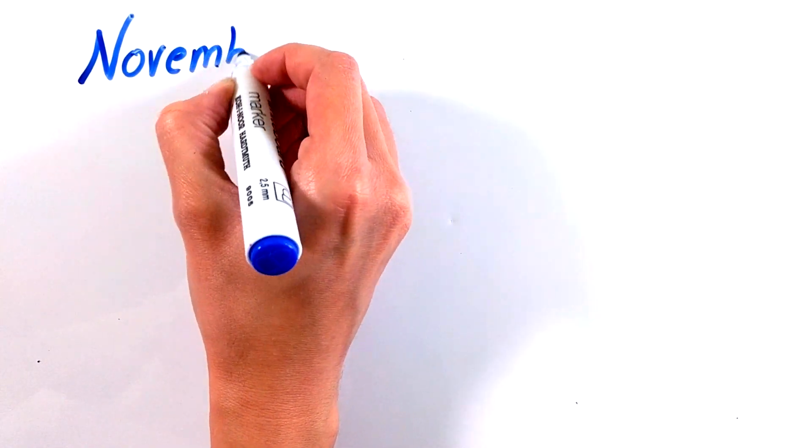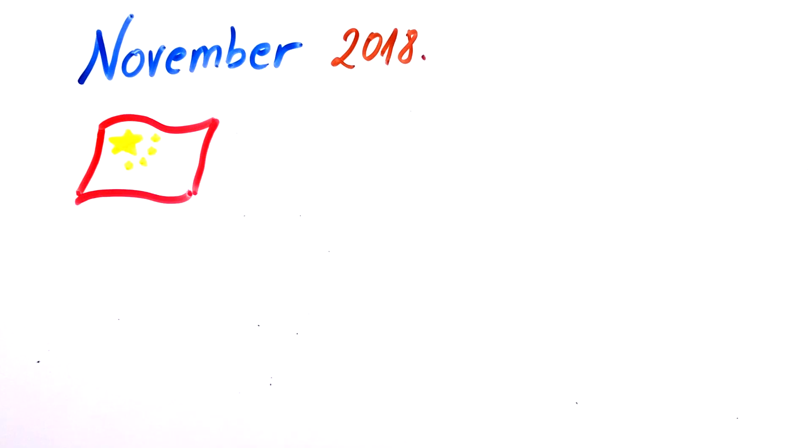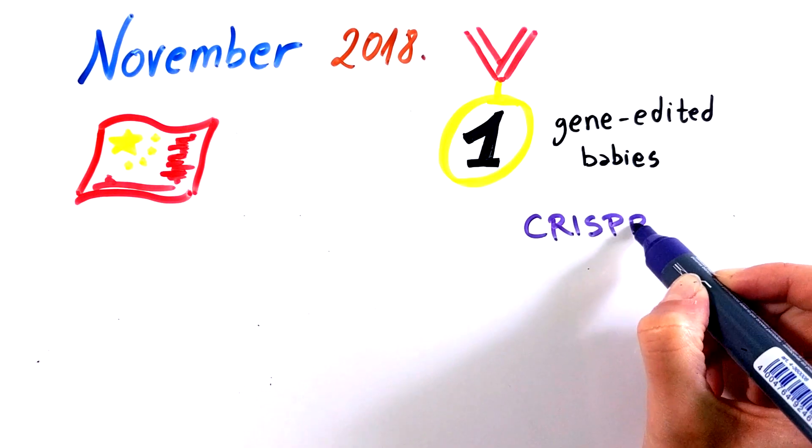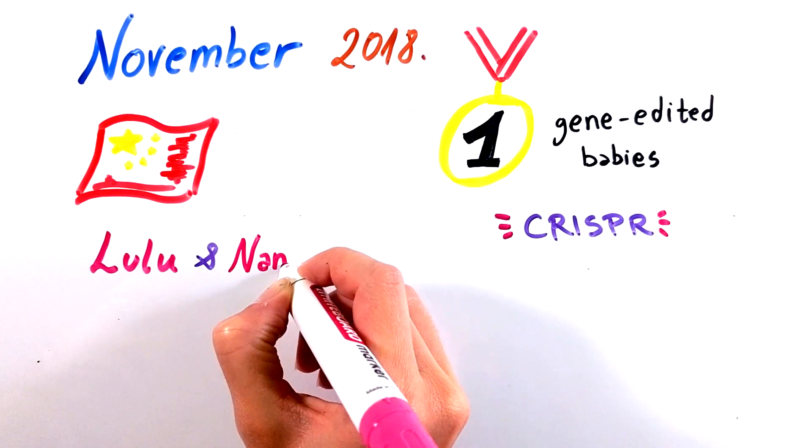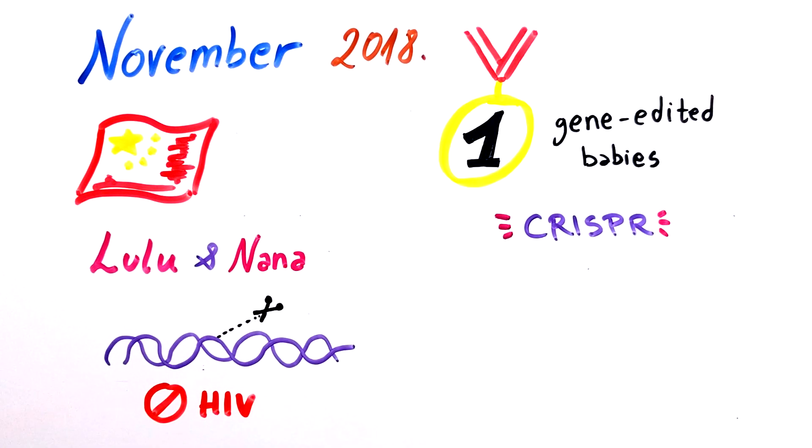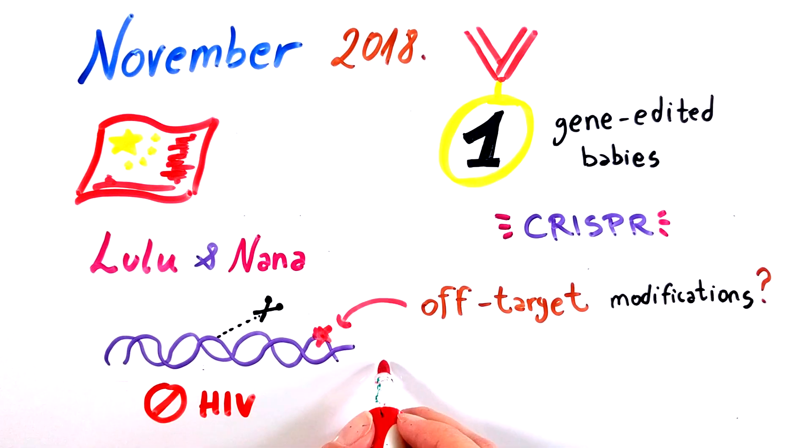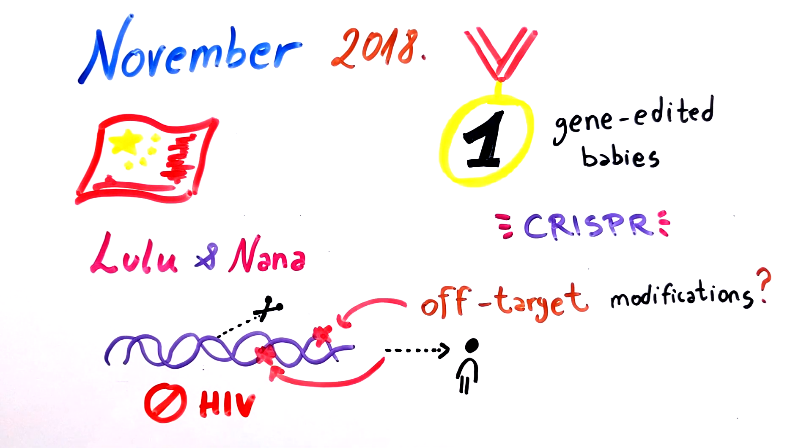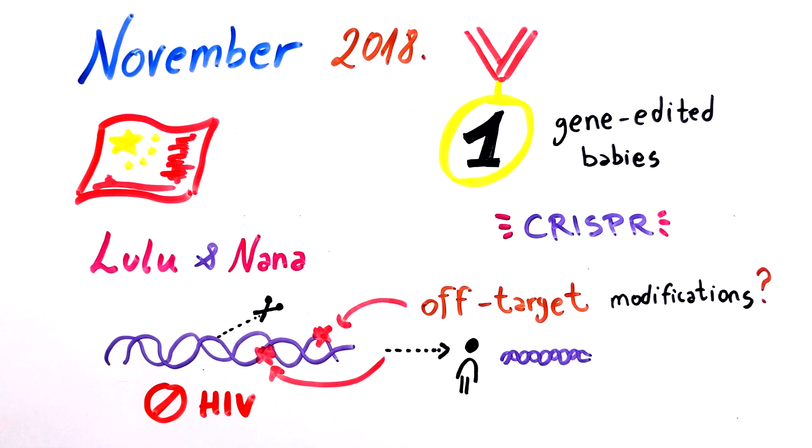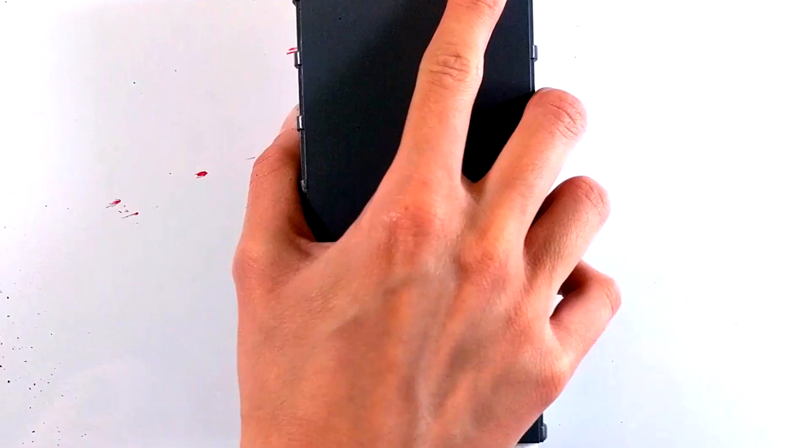In November 2018, a Chinese researcher created the world's first gene edited babies using CRISPR technology. He edited the human embryos of twin girls known as Lulu and Nana to protect them against HIV. However, this brought many concerns among scientists about possible off-target genetic modifications that could be transferred to future generations that we don't really even know about. He has been found guilty of conducting illegal medical practices and sentenced to 3 years in prison.